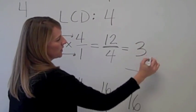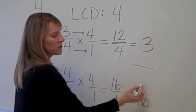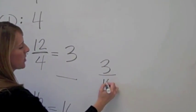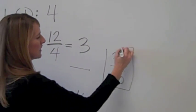This is your new numerator. This is your new denominator. So simplify, this fraction would be 3 sixteenths.